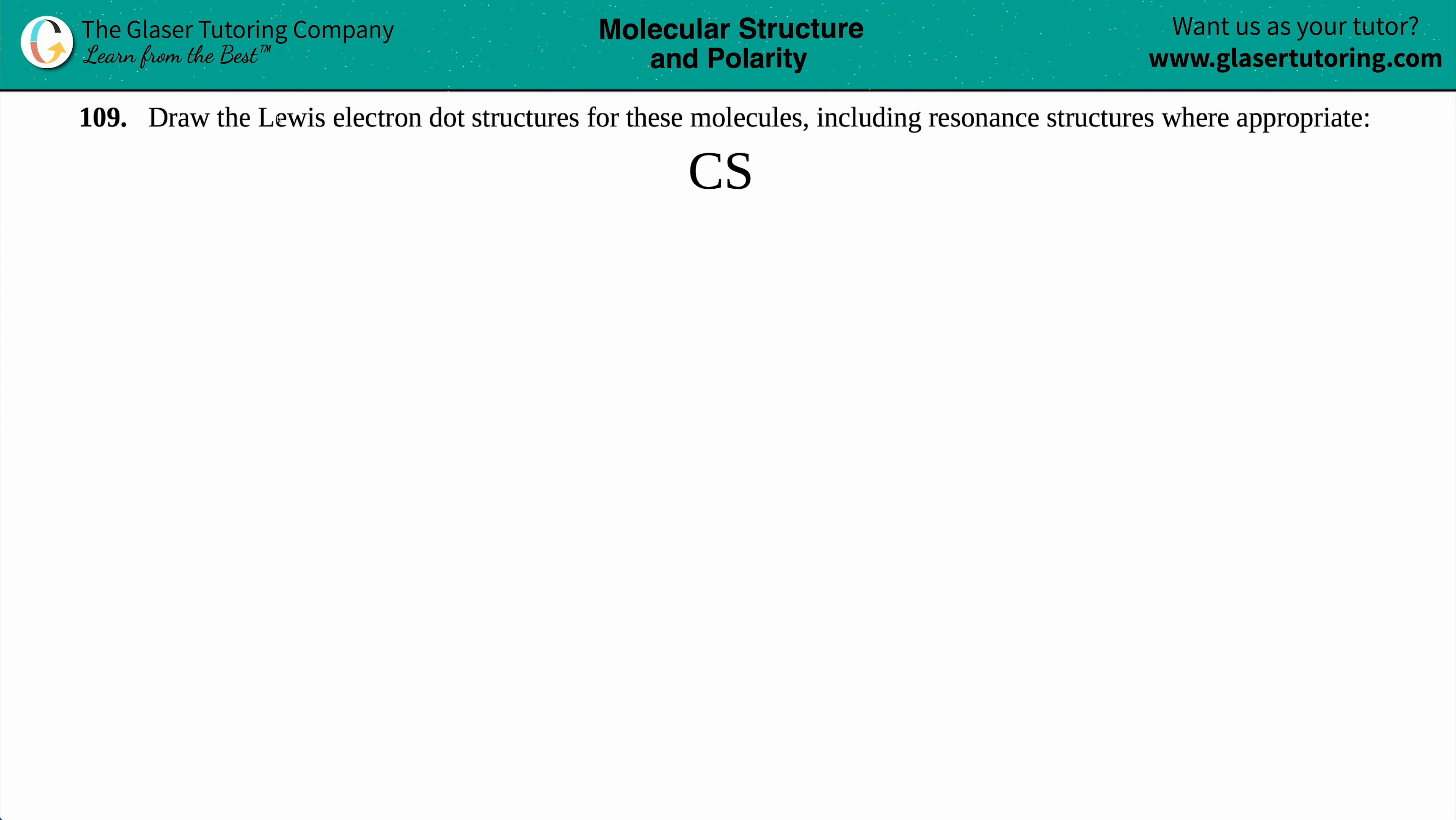Number 109, draw the Lewis electron dot structures for these molecules, including resonance structures where appropriate. And then we have CS. Okay. So we got to draw the Lewis structure and then the resonance structure, if appropriate. Now they say that we have to draw the Lewis electron dot structure. This is just the formal way of saying, draw those dots and those bonds, which of course we're going to do.